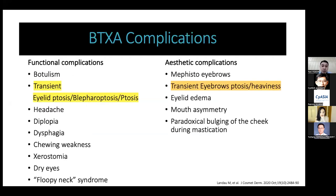This is the list of botulinum toxin complications. We have two transient ptoses: the eyelid and the eyebrow. Ptosis is also referred to as blepharoptosis or eyelid ptosis. Today we will focus on this ptosis.